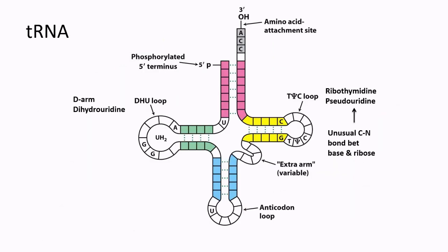Next is tRNA. tRNA serves as an adapter in translation, translating the language of nucleic acid into the language of protein. It is basically a single-stranded RNA folded into a precise 3D structure. The nucleotide number ranges from 73 to 93 nucleotides in each tRNA, and each tRNA carries a unique amino acid.